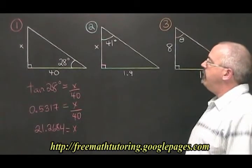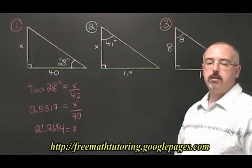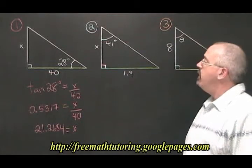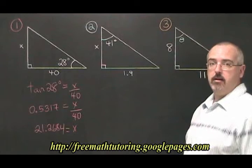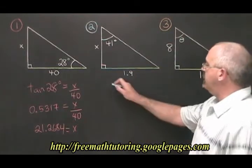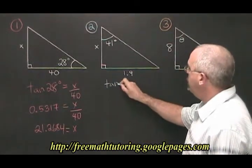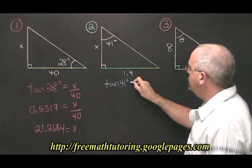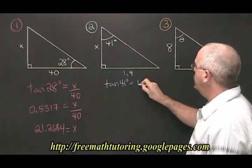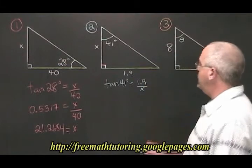In example two, we have a 41 degree angle. The opposite side is 1.9, and we are looking for the adjacent side. Our TOA formula looks like this. TAN of 41 degrees is equal to opposite 1.9 over adjacent X.